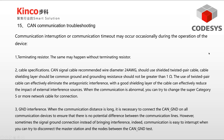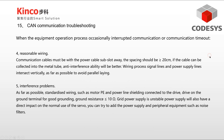However, sometimes the signal ground connection can introduce interference instead, causing communication interruptions. You can try disconnecting the GND between the master station and nodes to test. Reasonable wiring is also important: communication cables must be routed in separate conduits away from power cables. The spacing should be greater than or equal to 20 centimeters. If the cable can be enclosed in a metal tube, anti-interference ability will be better. Signal lines and power supply lines should intersect vertically and avoid parallel laying as much as possible.